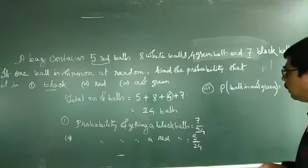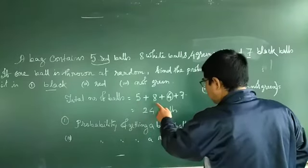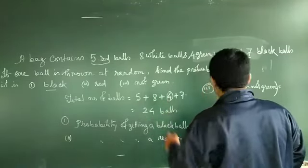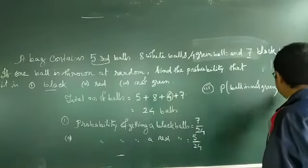How many balls are not green? These are 4 green balls, so not green is 20 balls. 20 balls are not green out of 24.